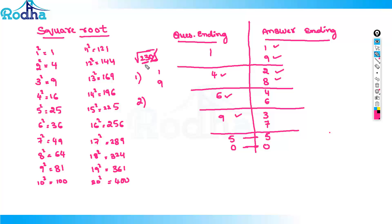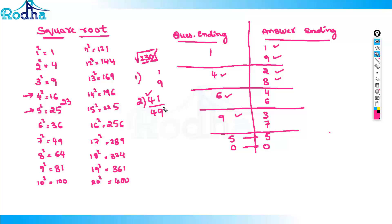23 comes between which perfect squares? 4 squared is 16, and 5 squared is 25. So 23 is between 16 and 25. Since it falls between these two, my answer will begin with 4. From the previous step, the answer ends with either 1 or 9 — so it is either 41 or 49. How to decide which is correct?